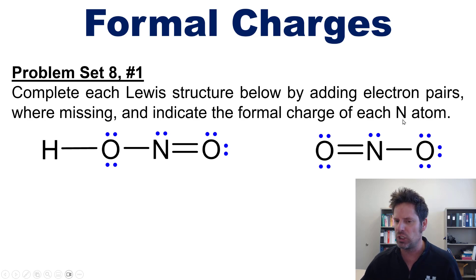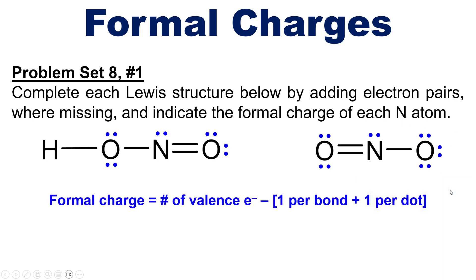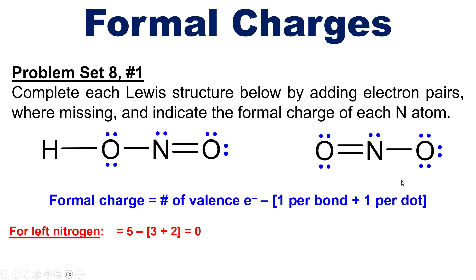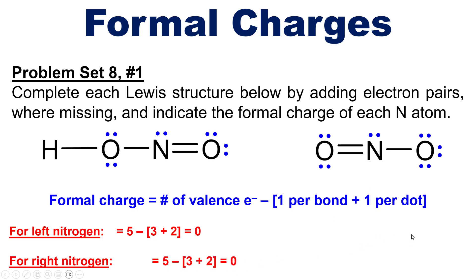Now the second half: calculating the formal charge of each nitrogen atom. Remember, formal charge equals number of valence electrons minus one per bond plus one per dot. Nitrogen is in column 5A, so it has five valence electrons. In the leftmost structure, this nitrogen has three bonds and two dots, so its formal charge is five minus three plus two, which equals zero. The nitrogen on the right also has three bonds and two dots, so its formal charge is also five minus three plus two, which equals zero.